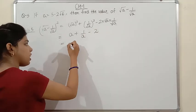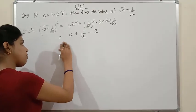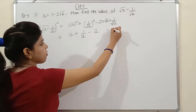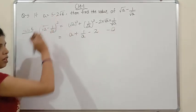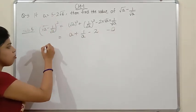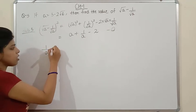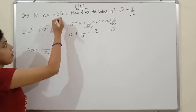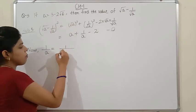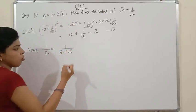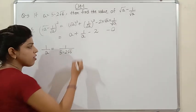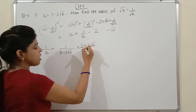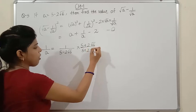The value of a is given. We only need to find 1/a first. So 1/a = 1/(5 - 2√6). The denominator has an irrational number, so we rationalize by multiplying and dividing by (5 + 2√6).